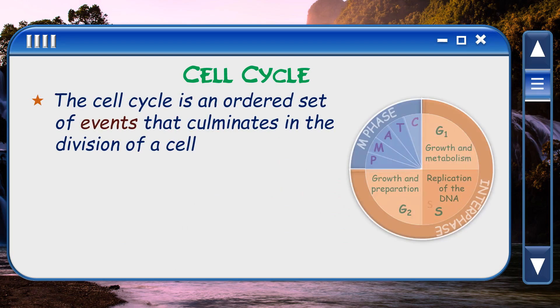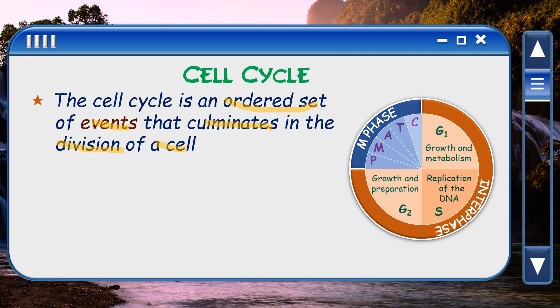Cell cycle. The cell cycle is an ordered set of events that culminates in the division of a cell.